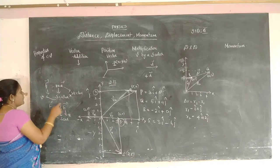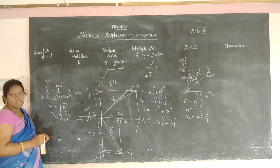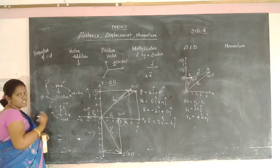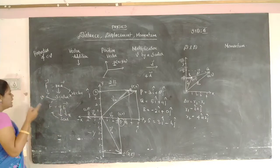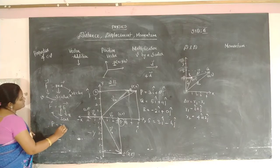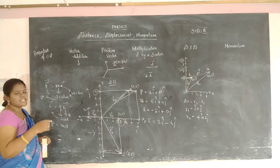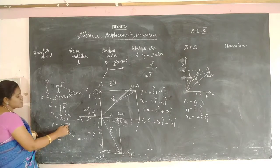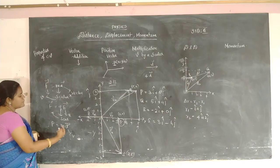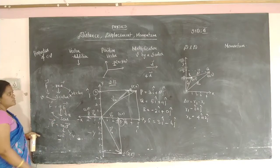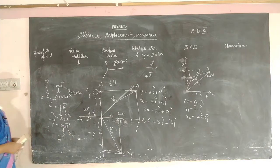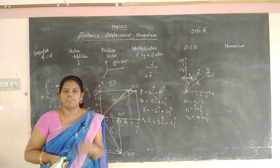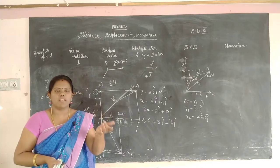Another example: F = q·E — electrostatic force equals the product of charge and electric field. Electric field is a vector; charge is a scalar. So multiplying scalar and vector gives the vector. Also, p = m·v: momentum equals mass times velocity. Mass is scalar, velocity is vector, so momentum is also a vector.